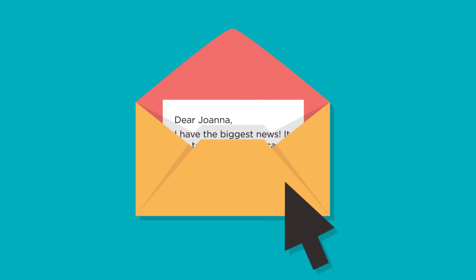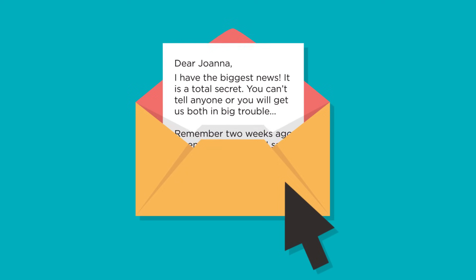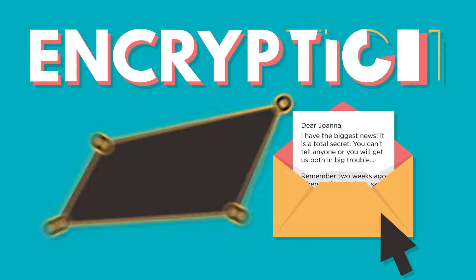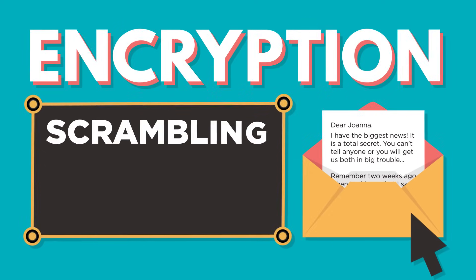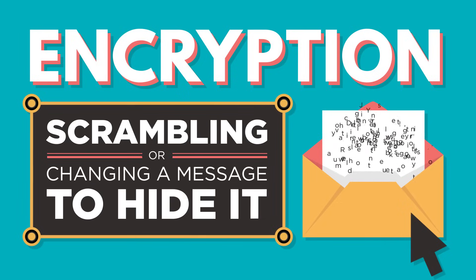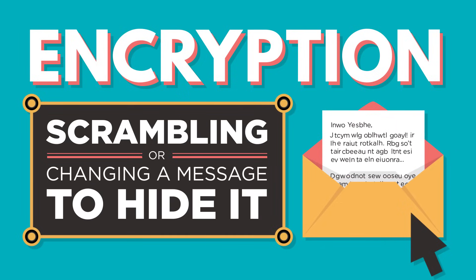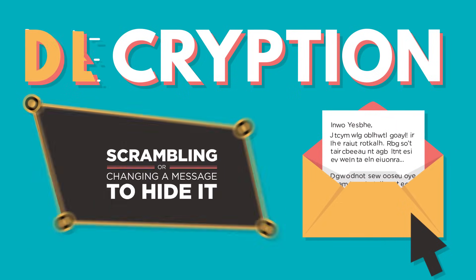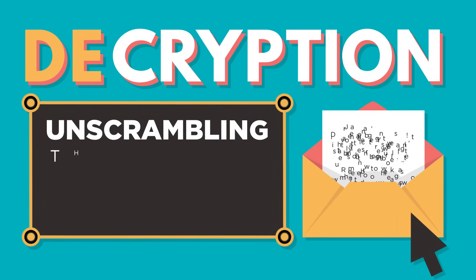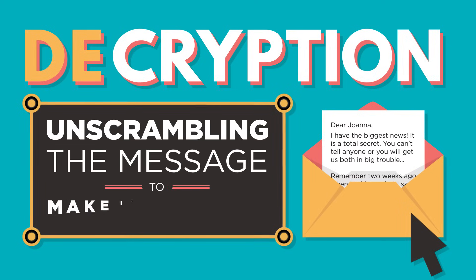So how is all this private stuff kept secret? Data of any kind can be kept secret through a process known as encryption, the scrambling or changing of the message to hide the original text. Decryption is the process of unscrambling that message to make it readable.